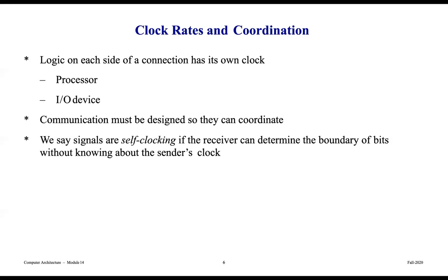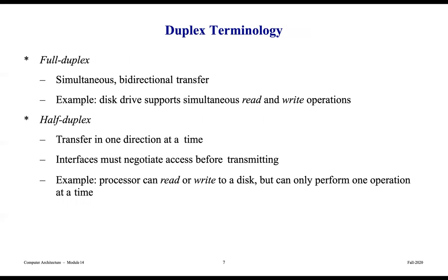What about clock rates and coordination? There is logic on each side of a connection, and each has its own clock — so the processor and the I/O device must be synchronized. Communication must be designed so they can coordinate. Signals are self-clocking if the receiver can determine the boundary of bits without knowing about the sender's clock, and there are constructs that allow this to happen.